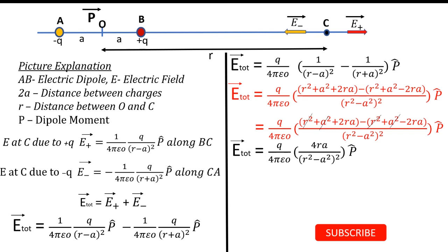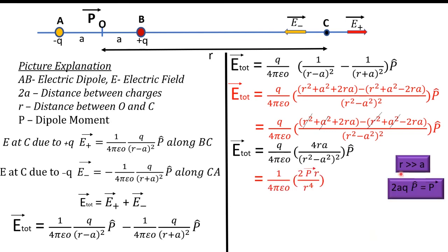When r is very much greater than a — meaning the distance of observation is much greater than the distance between the charges — we apply the approximation r >> a. The distance between charges may be in nanometers (10⁻⁹ m), while the field observation point may be in millimeters, a drastic difference. Since a⁴ in the denominator becomes negligibly small, we can neglect it, leaving only r⁴ in the denominator.